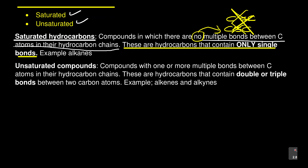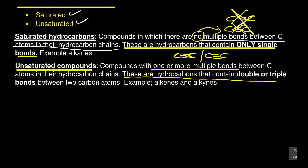Let's look at the unsaturated hydrocarbon. What is the definition? It's the opposite. You can say compounds with one or more multiple bonds. So you expect to have a compound with a double or a triple bond — these are called multiple bonds. Compounds with one or more multiple bonds between the carbon atoms in their hydrocarbon chains. Or another definition I prefer: these are hydrocarbons that contain a double or triple bond between two carbon atoms.